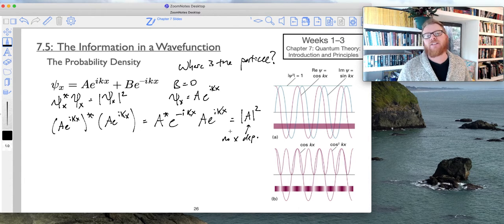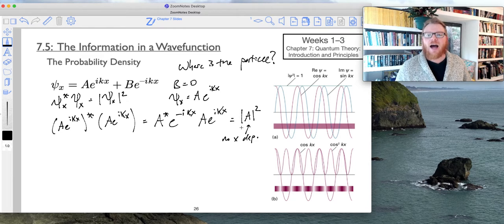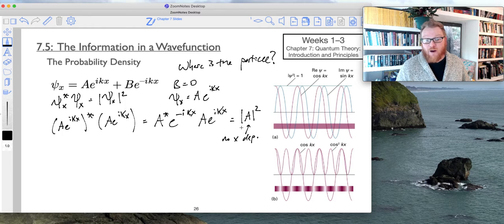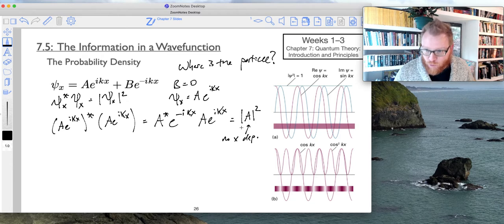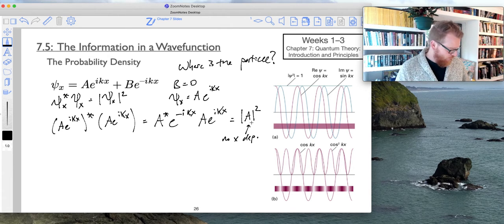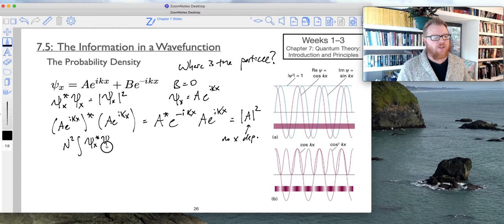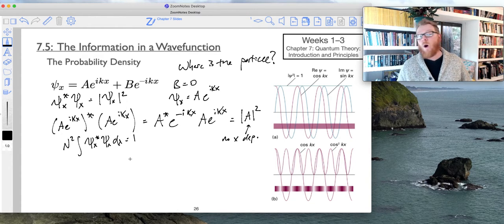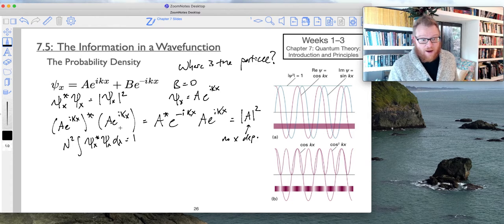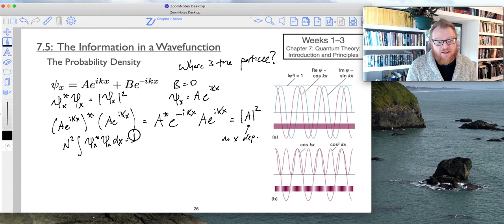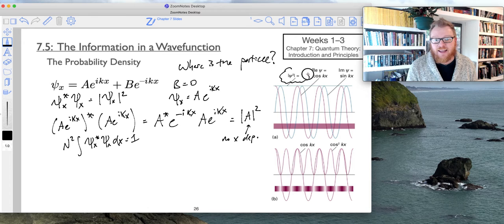So with the square modulus of this just being a constant, it implies the wave function can be found everywhere simultaneously with equal probability. So in other words, if I were to normalize this wave function, we know that with the normalize wave function, it's n squared integral of psi star psi dx all equals one.